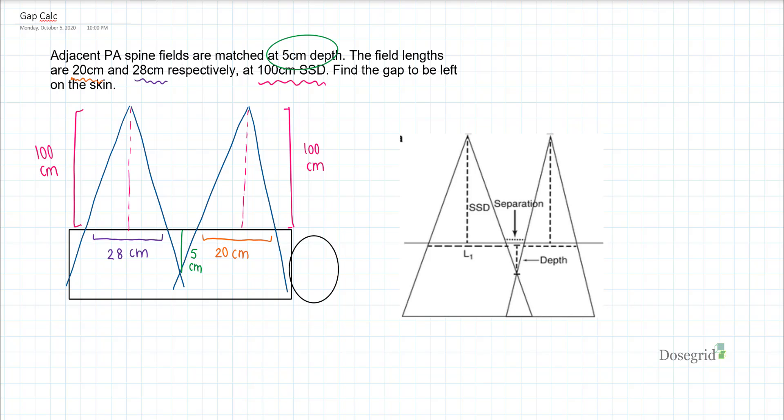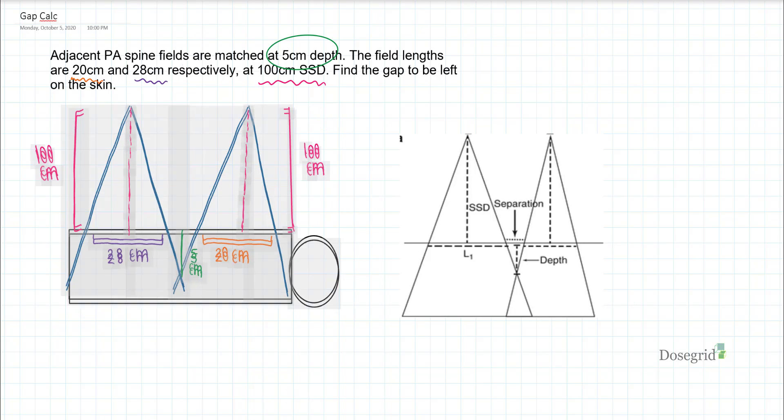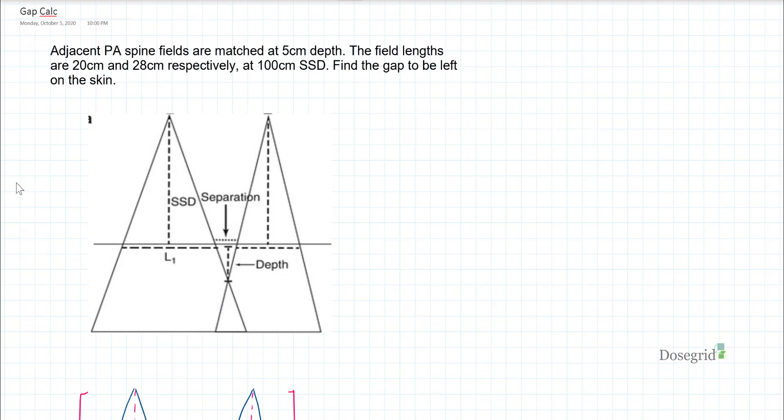We want to find the gap separation on the skin. I always think of the gap as two sections, G1 and G2, split by the depth in the middle.